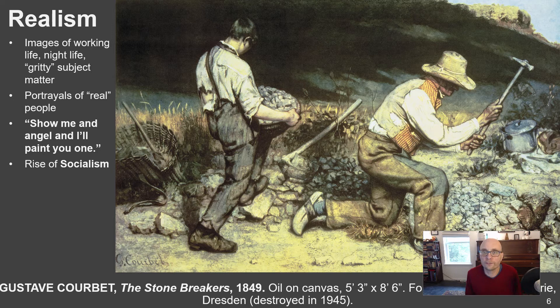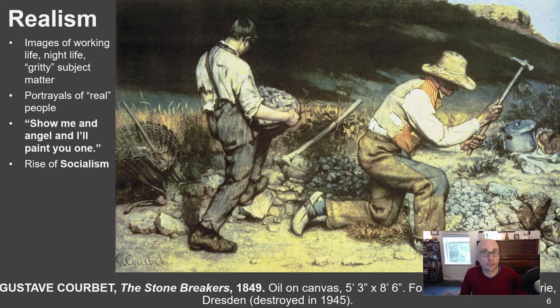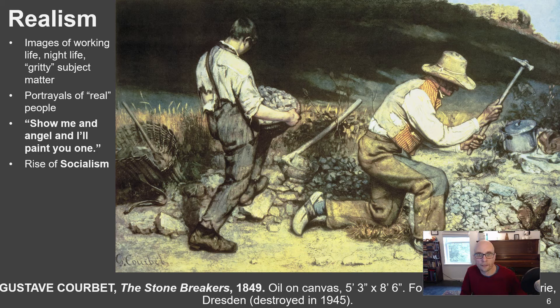A key Realist work is called The Stonebreakers, by the key Realist painter Gustave Courbet. Rather than painting big mythological, biblical, or historical scenes, Courbet chose the subject of two workers — a boy and an old man breaking rocks. He took a segment of society normally ignored, forgotten, or even shamed, and painted it on a large, heroic scale in the same way a traditional painter would have painted Greek mythology or the Bible. For Courbet, these people are the heroes. He grew up in the country, around peasants and field hands, and was interested in their struggles and the inequalities of life.